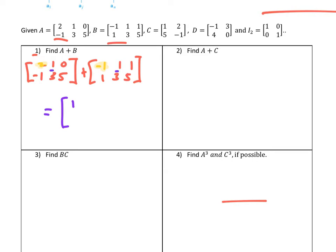Then I go to the next pieces: 1 + 1 is 2, then 0 + 1, and so on. The second row gives us 0, 6, and 10. Note this is a 2×3 matrix and this is a 2×3 matrix.